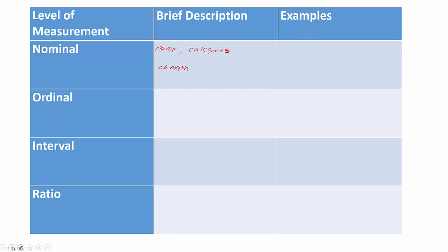Examples of nominal data: a jersey number — each player is assigned a number, but that number just represents a child, making it easier for the coach to say 'look out for number five' without knowing the child's name. Even though they have a number, the numbers truly represent the children. Same idea with your social security number — it's a number, but it represents you. Hair color and gender are obviously nominal: they are names for categories, and there is no way we would do math with those.